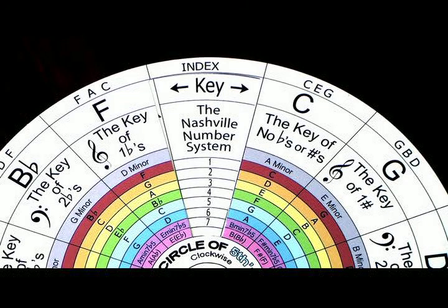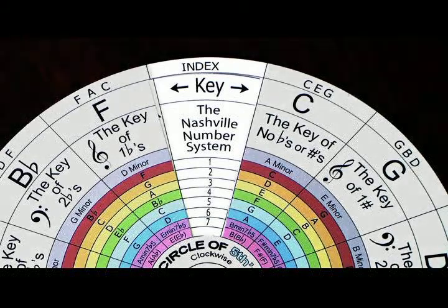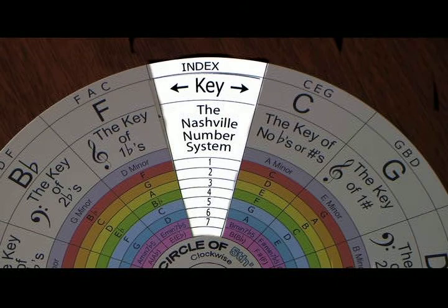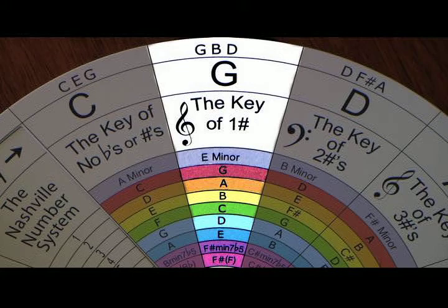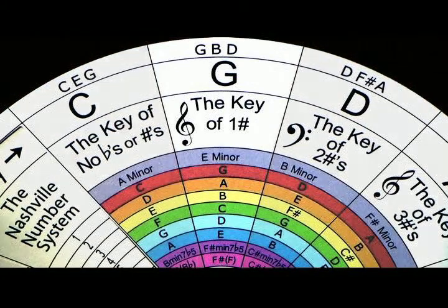Use the Nashville number system. Look on the Nashville number system section of Dial-A-Note Dial Harmony and find the numbers in the progression of the song: 1, 2, 4, 5. In this scenario, the 1 is in the key of G. Now look at the G column of Dial-A-Note Dial Harmony, and you will see that the 5 is the D chord, the 4 is the C chord, and watch for the 2, which is the A chord, in the progression of this song. Problem solved. Aren't you glad you used the dial?